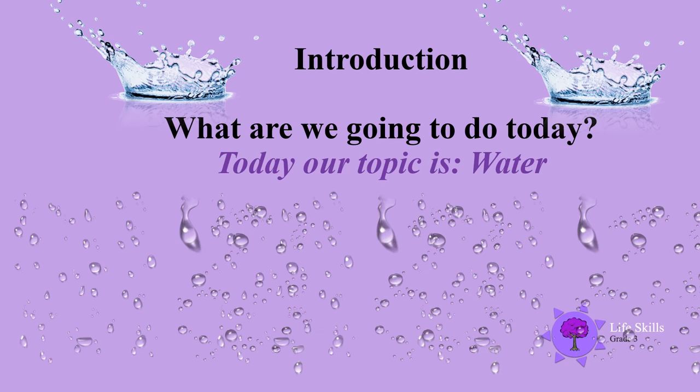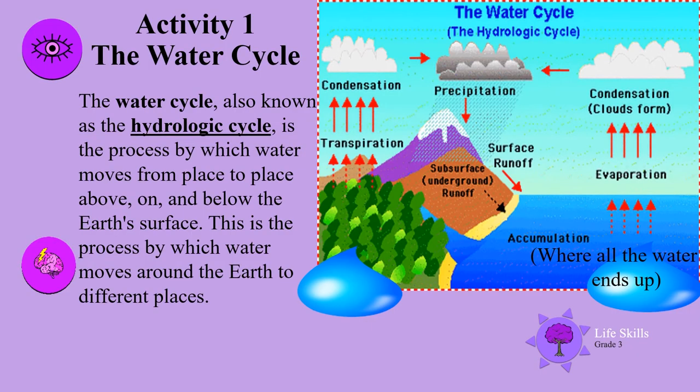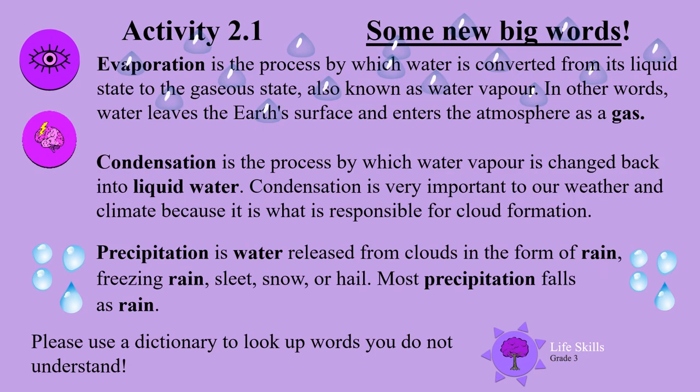Welcome back, grade 3 clever children, mums and dads! Our topic today is water. Activity 1: The Water Cycle. The water cycle, also known as the hydraulic cycle, is the process by which water moves from place to place above, on, and below the earth's surface. Here are some new big words for you, grade threes.